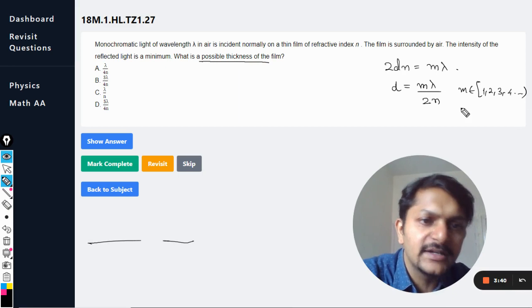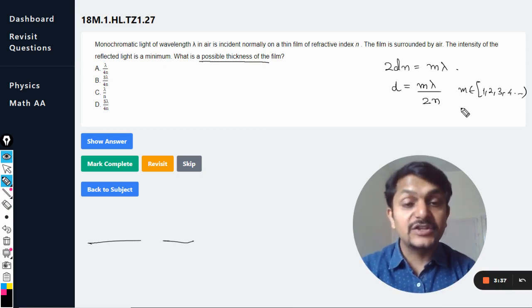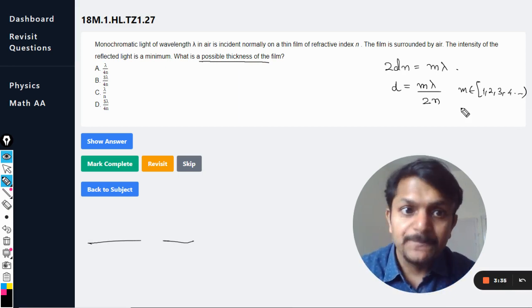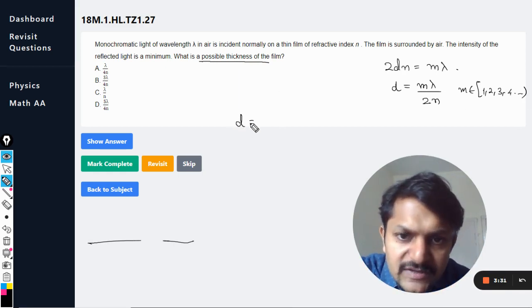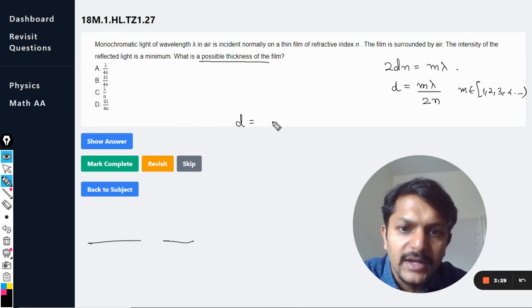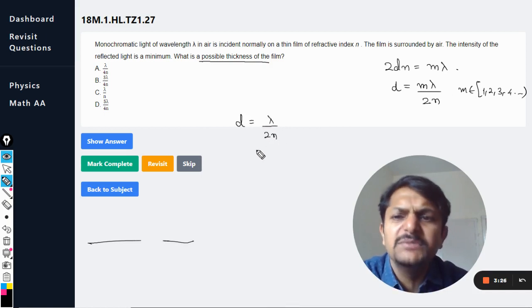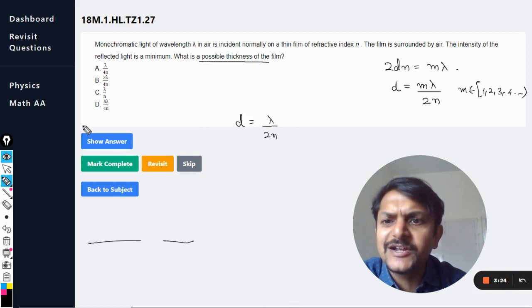And n is the refractive index, so we can just find the possible values. So d is equal to, when m is equal to one, it is coming out to be lambda divided by 2n. Now this is the minimum thickness that is required, but this minimum thickness is not here in the option.